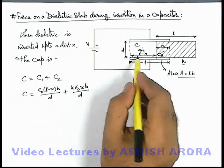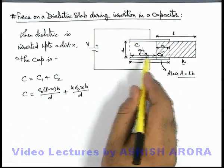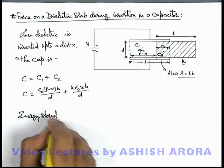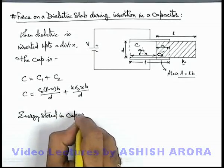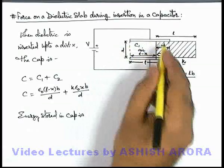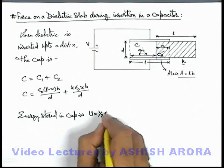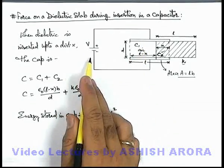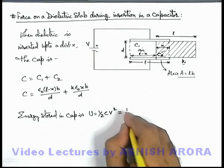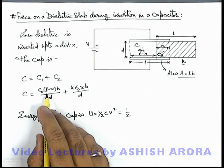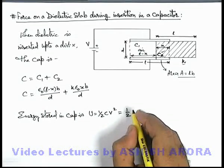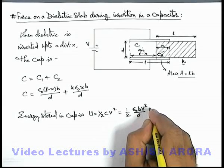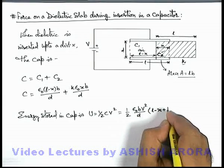Now in this situation if we calculate the total energy stored in the capacitor, we can directly write energy stored in capacitor, that is the total energy stored in the region between the plates. This can be written as half CV square. Here we use half CV square because V is always constantly maintained by the battery. So this can be written as half, if we just substitute this capacitance, we can keep epsilon not b by d common. So this will be epsilon not bV square by d, multiplied by l minus x plus Kx.